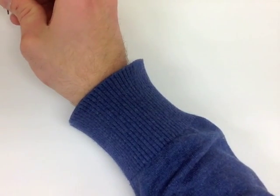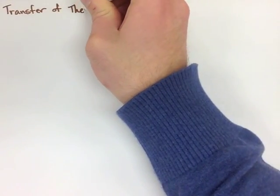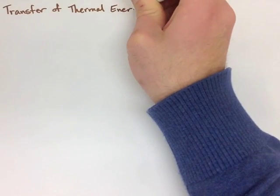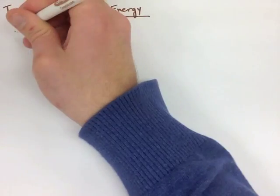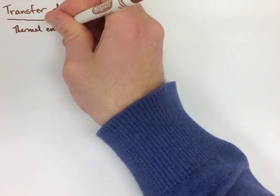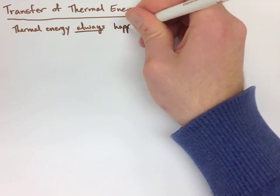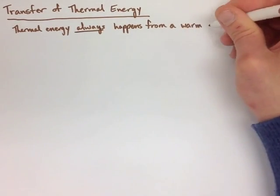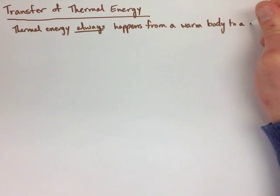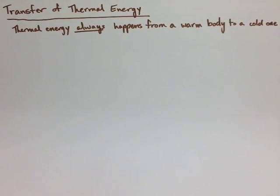Now the last thing we're going to look at is the transfer of thermal energy. Thermal energy always happens from a warm body to a cold one. The example I like to use is when you open up your window, if it's cold outside, the cold air doesn't come in, you actually let the warm air out. It always goes from warm to warm.